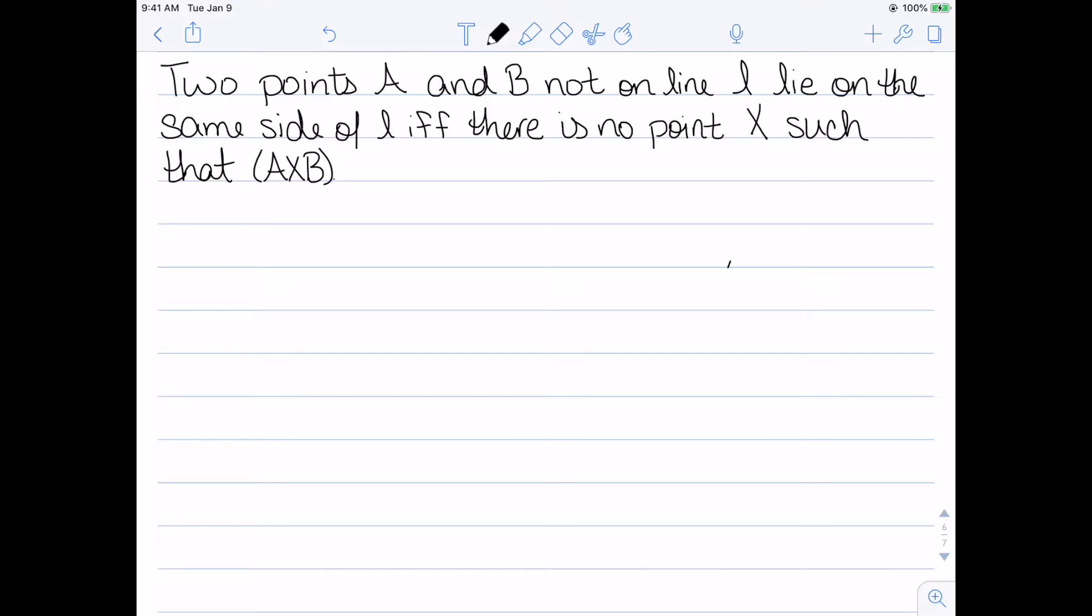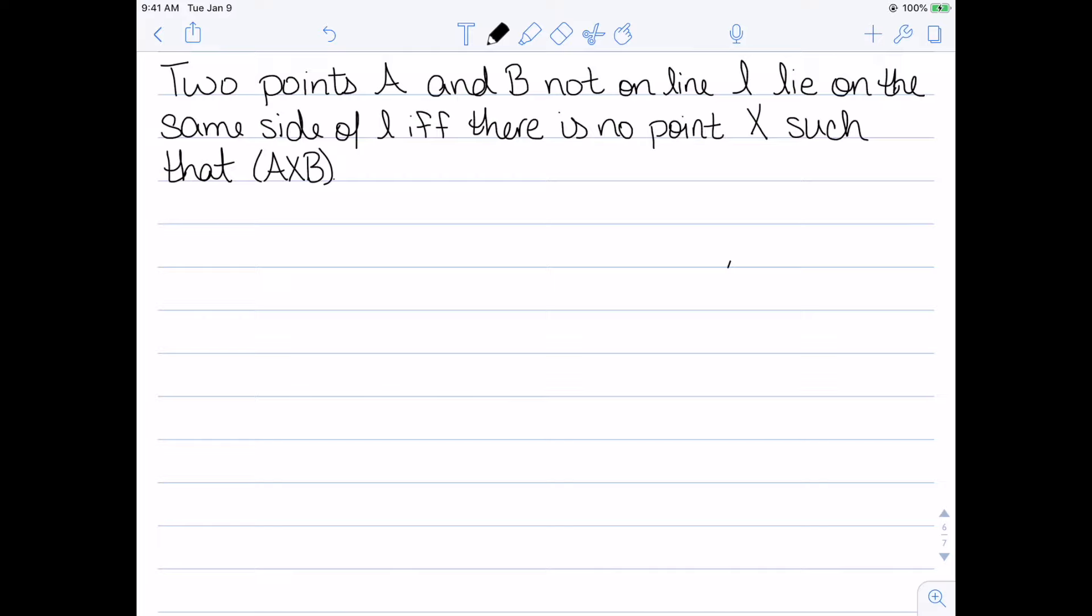Two points, not on the line, but on the same side. Then there is no point X such that A, X equal to B. And conversely, if there is no point X such that A, X, B, then these points must lie on the same side of the line. My final consequence is known as the postulate of Pasch.